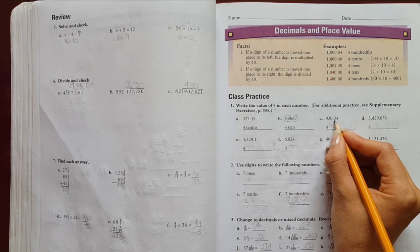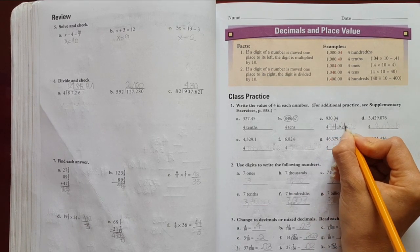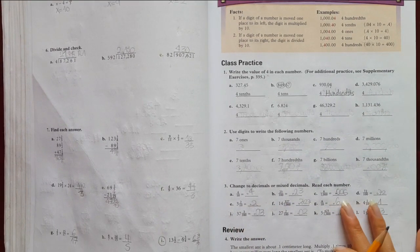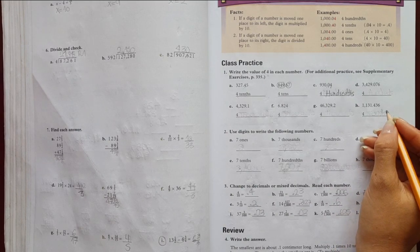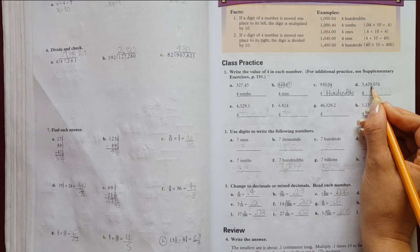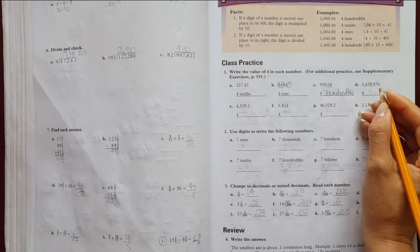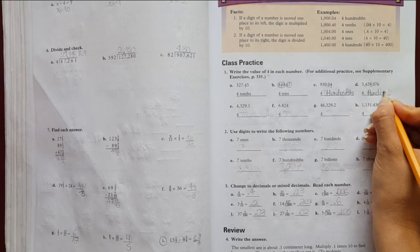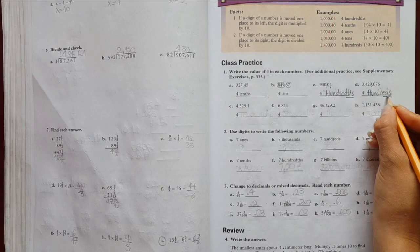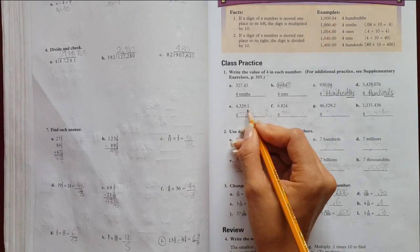Here, for, qué sería? Sé que va después del punto entonces el primer, en la primera posición is tenths y la segunda hundredths. So I want to write down here hundredths, right? You see, it's just to write down the position. Here the number four, como está antes del punto significa que es un número entero entonces lo puedo nombrar normal ones, tens, hundreds. Este es el hundreds normal.